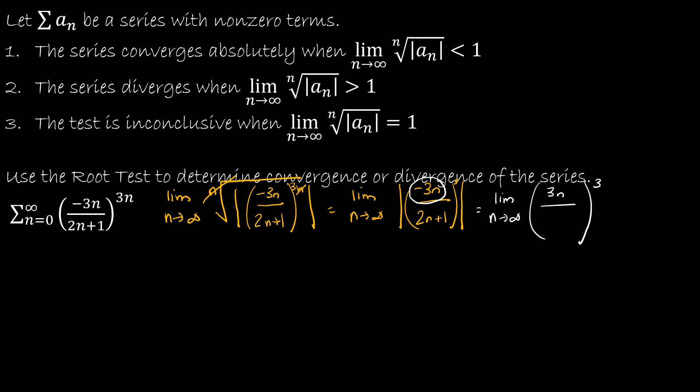And I'm going to keep that 3 on the outside, so I'm not going to distribute that 3. And then I'm going to think about 2n plus 1. Well, 2n plus 1 is going to be positive as n is approaching infinity, so I can take that out of the absolute value as well. So now what I'm looking at is the limit as n approaches infinity of 3n over 2n plus 1.